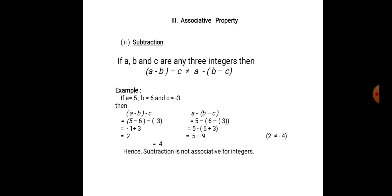Now, associative property under subtraction. If a, b and c are any three integers, then a minus (b minus c) is not equal to (a minus b) minus c. Example: if a is equal to 5, b is equal to 6 and c is equal to minus 3, then a minus (b minus c) is equal to 5 minus (6 minus of minus 3). 5 minus 6 is minus 1.